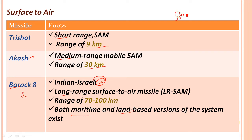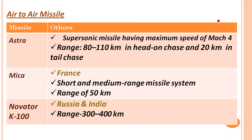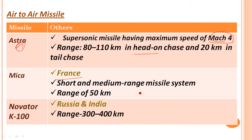So surface-to-air missiles total 3; surface-to-surface is 4 and surface-to-air is 3. Air-to-air missiles are also 3. India developed its first air-to-air missile called Astra. Astra is a supersonic missile with a maximum speed of Mach 4. Its range is 80 to 110 kilometers for head-on engagement and 10 kilometers for tail-chase. Astra is short to medium range, approximately 50 kilometers average range.